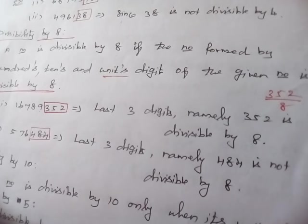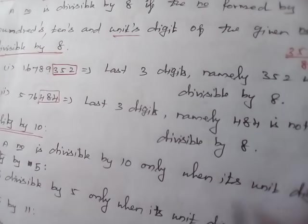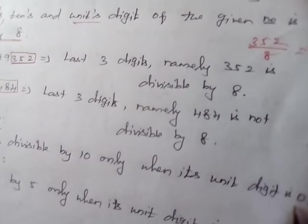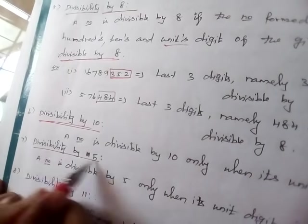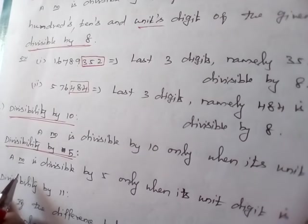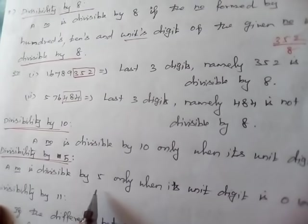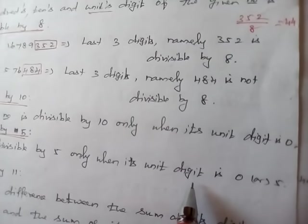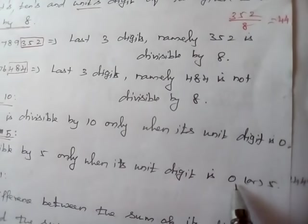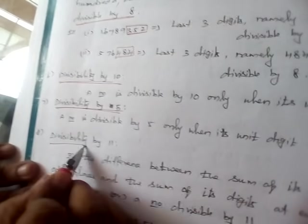Divisibility by 10: a number is divisible by 10 only when its unit digit is 0. Divisibility by 5: a number is divisible by 5 only when its unit digit is 0 or 5.